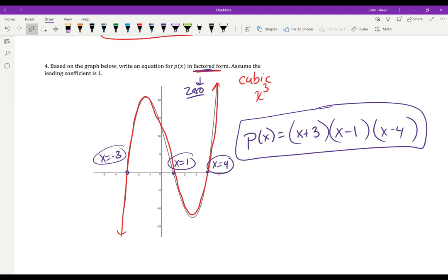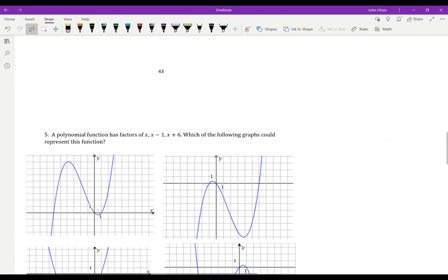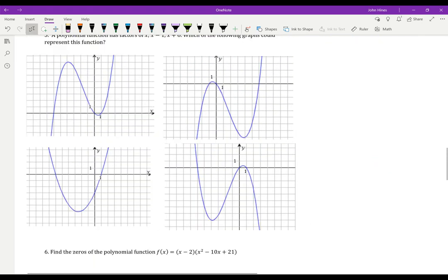So if I know my 0s, I can work backwards and get my factors. That's the whole idea of this lesson. And we're going to keep practicing that a couple more times. And it's almost done.